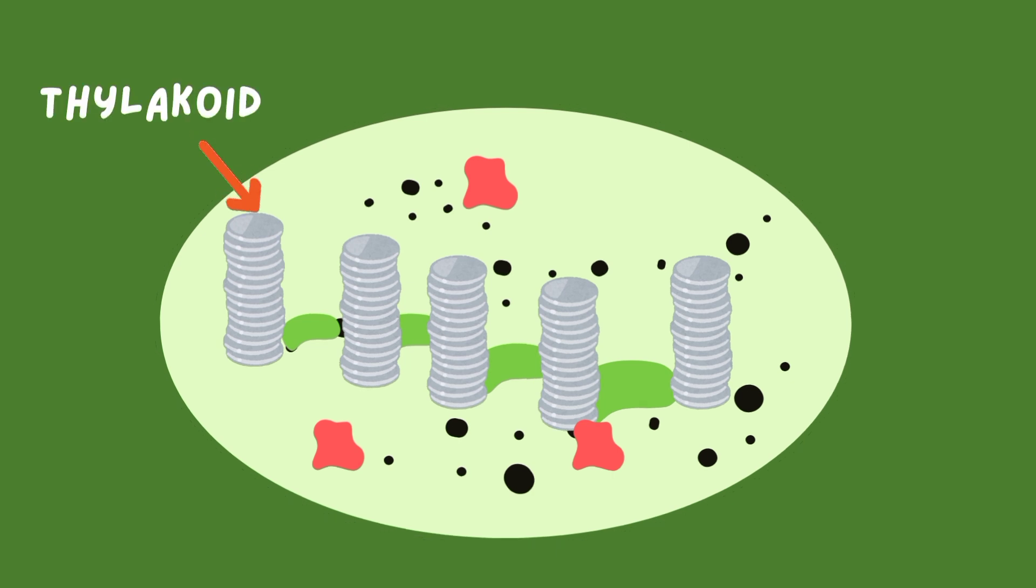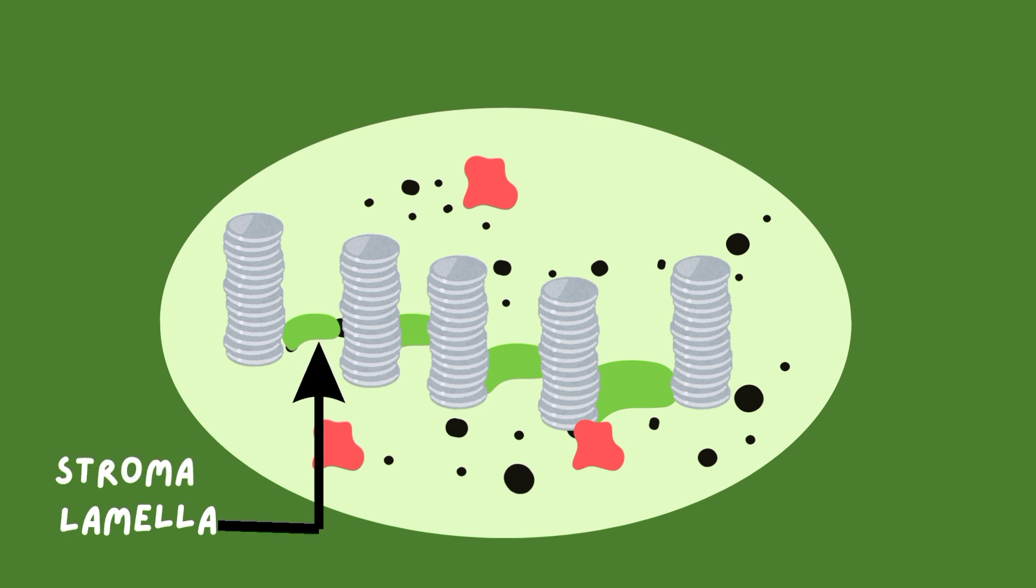Inside the chloroplasts, a number of flattened membranous sacs called thylakoids are present. They are arranged in stacks called grana. The surrounding fluid is called stroma. A tubule called stroma lamellae connects the thylakoids of different grana.